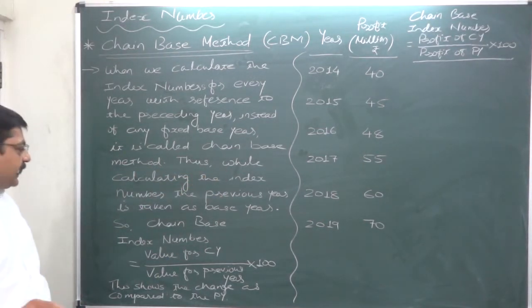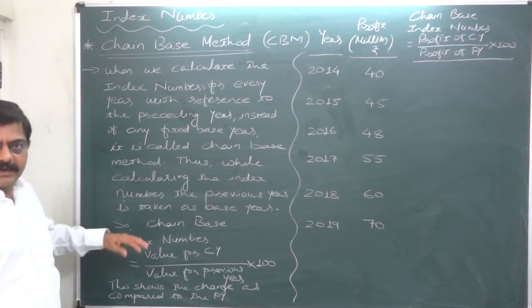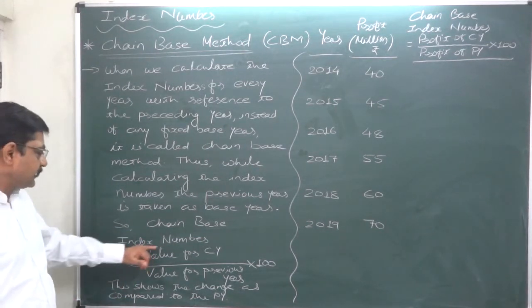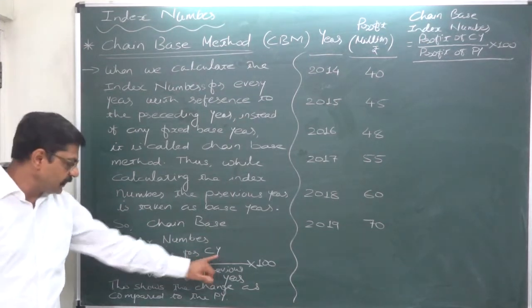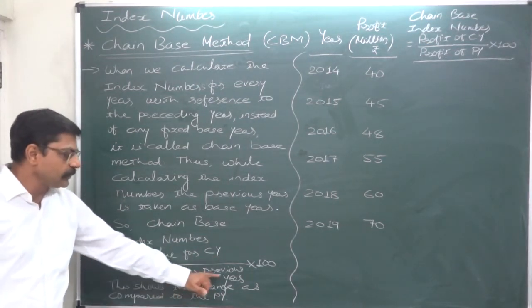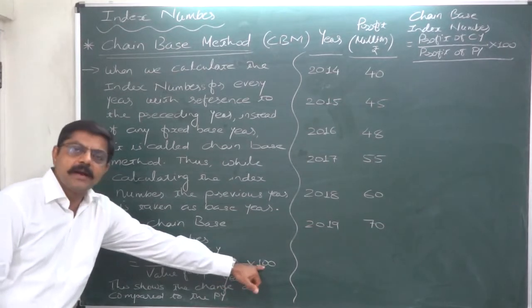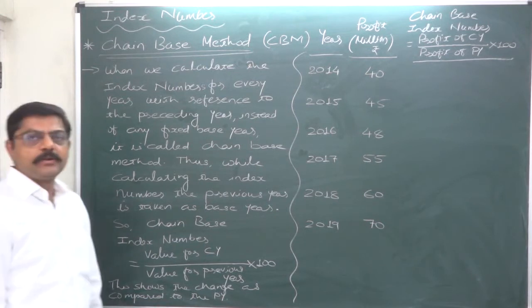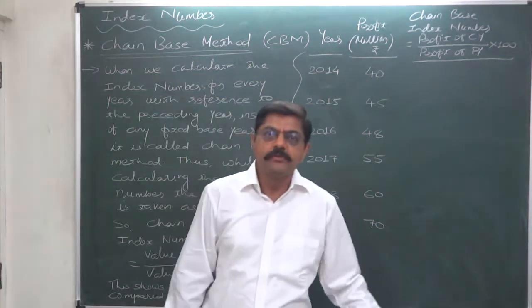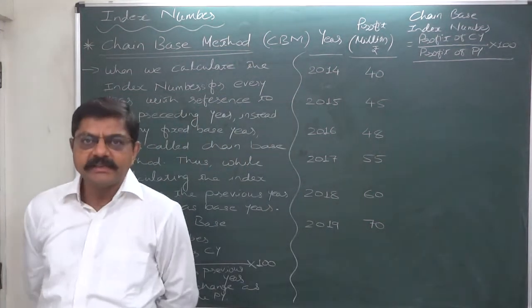Thus, while calculating the index number, the previous year is taken as Base year. According to that logic, chain Base index number for any year will be value for the current year divided by value for the previous year, multiplied by 100 to get the percentage. This shows the change as compared to the previous year.